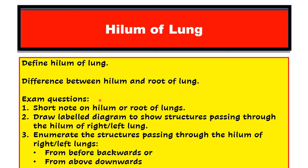In theory exams, you can be asked to write a short note on either the hilum or root of lungs, or you could be asked to draw a labeled diagram showing structures passing through the hilum of either the right lung, left lung, or both lungs. You can also be asked to enumerate the structures passing through the hilum of the right or left lung from before backwards or from above downwards.